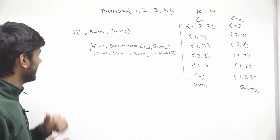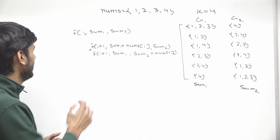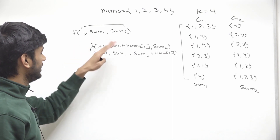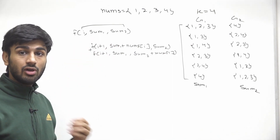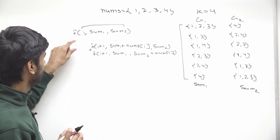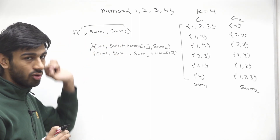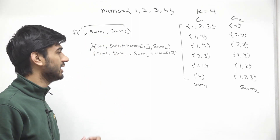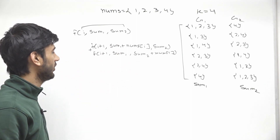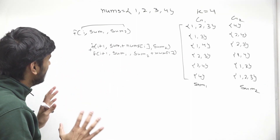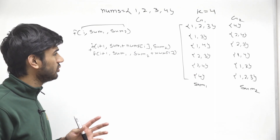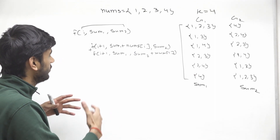The problem with this recursive relation is that we have 3 variables, and the number of states will be really huge. We will not be able to allocate that much memory to store all the distinct recursive states.